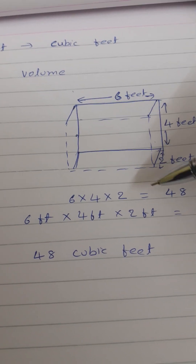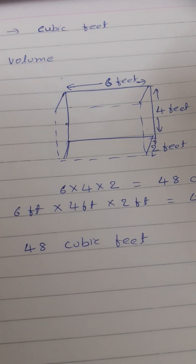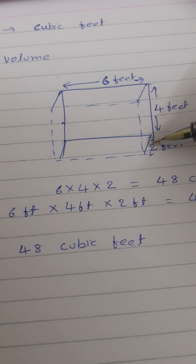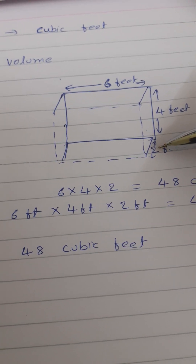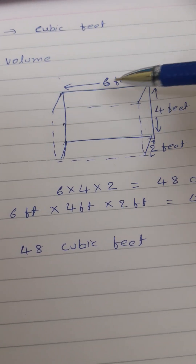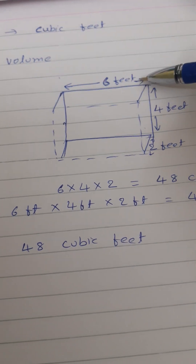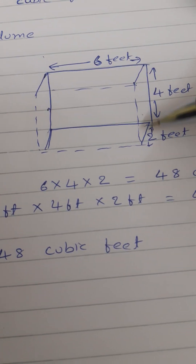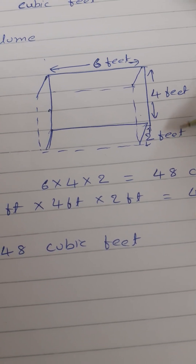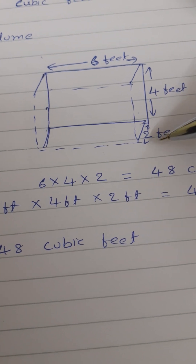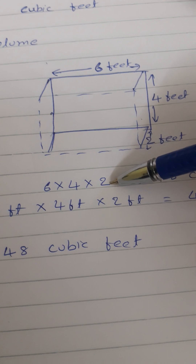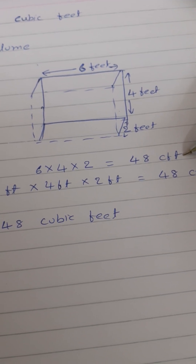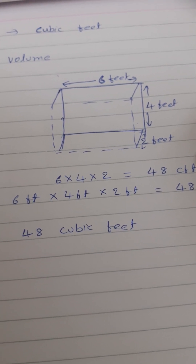For example, I am taking a small Tata-type vehicle, which is 6 feet in length and 4 feet in width, and the height of the body where the sand is stored is about 2 feet. The formula for volume is length into breadth into height. So the length here is 6 feet, breadth is 4 feet, and height is 2 feet. Multiplying 6 feet into 4 feet into 2 feet: 6 times 4 is 24, 24 times 2 is 48. So we get 48 CFT — cubic feet.